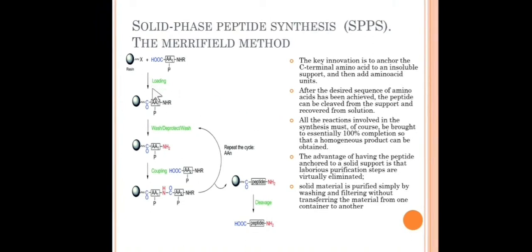I will explain with this flowchart. I have this solid support, most of the time it is a resin. This resin and amino acid, the C-terminus amino acid which is properly protected with R group. This C-terminus is attached or anchored with this polymer and this step is called loading.